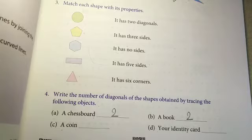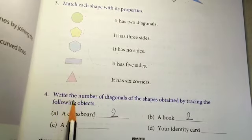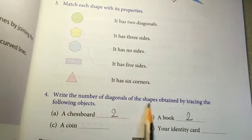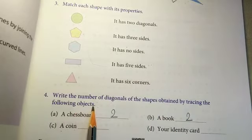Now in today's work we will do exercise number 1.1 question number 4. Question is write the number of diagonals of the shapes obtained by tracing the following objects.